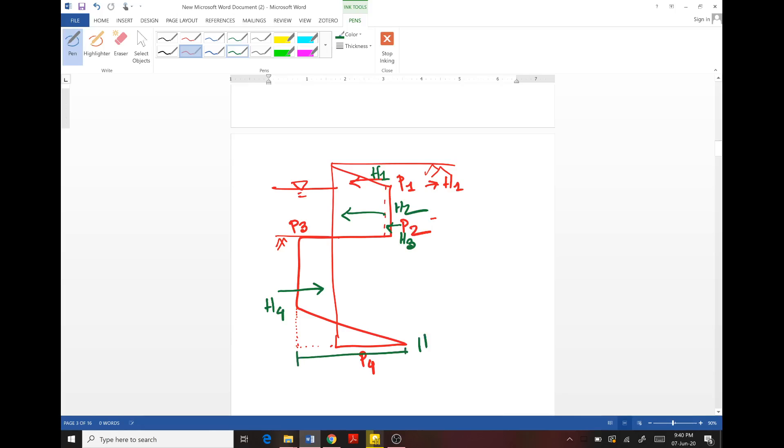H1 equals this triangular area, so half into P1 into 3, so 188.1 pounds. H2 is 125.4 into 10, which equals 1254 pounds.